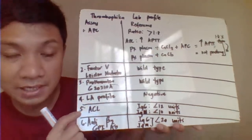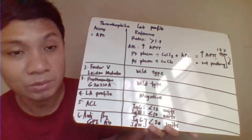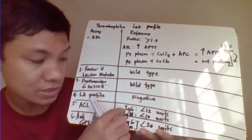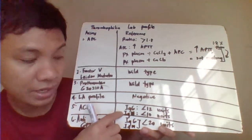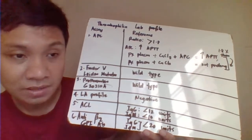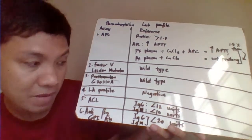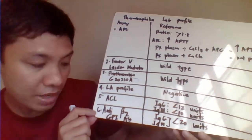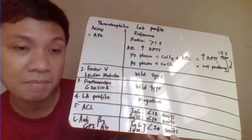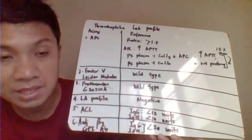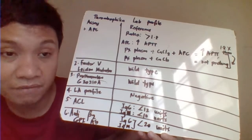For anti-cardiolipin antibody — measured as IgG and IgM — the normal reference for IgG is less than 12, and for IgM less than 10. If the result is more than 12 or more than 10 respectively, that indicates thrombosis. For anti-β2GPI antibody, the normal reference for both IgG and IgM is less than 20 units. Results more than 20 units signify thrombosis.